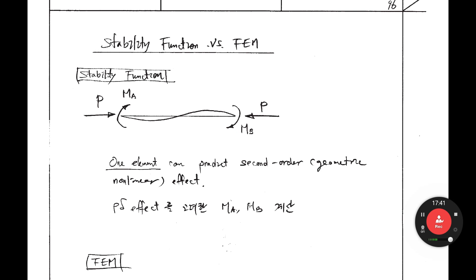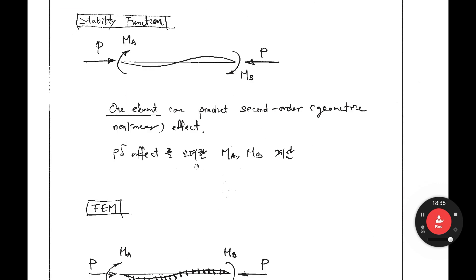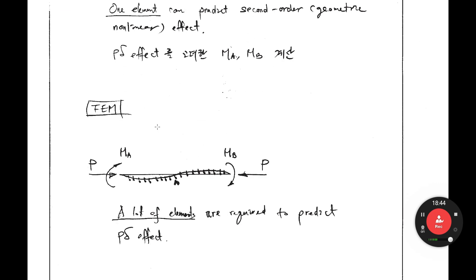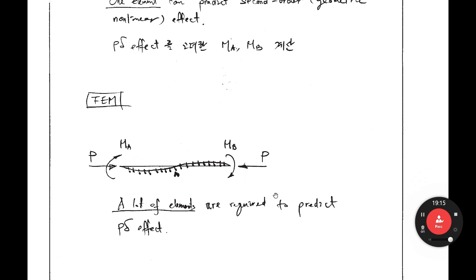If you compare the stability function versus FEM: the key characteristic of the stability function is that one element can predict second-order geometric nonlinear effects accurately, because the calculation of MA and MB considers the P-delta effect using the exact nonlinear equation we derived. FEM uses a very approximate equation for the P-delta effect, so in an FEM approach a large number of elements are required to capture it. That is the difference between the two.